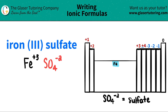Now since we have both components and both charges, we do this little trick where we crisscross the charges to say how many of each we need. This plus 3 crisscrosses down telling me I need 3 of the sulfates, and this negative 2 crisscrosses down telling me I need 2 of the irons. When you do your crisscrossing, don't worry about the positives and negatives — just use the whole number counting.